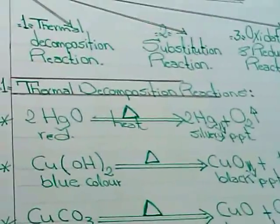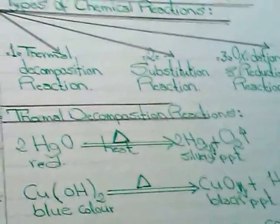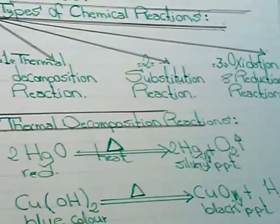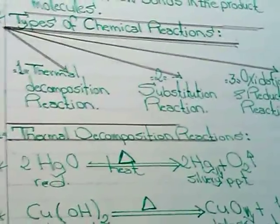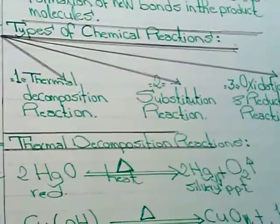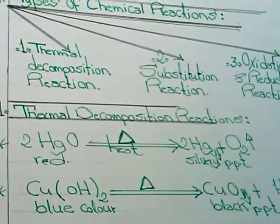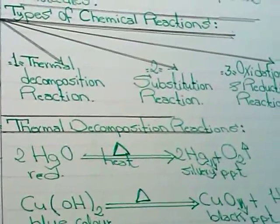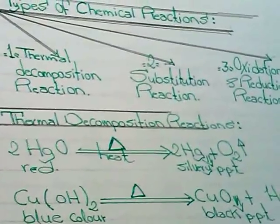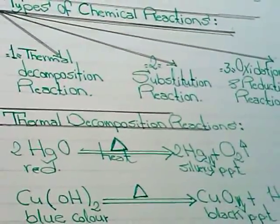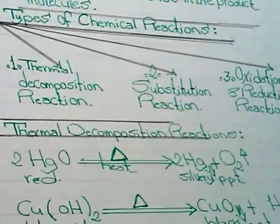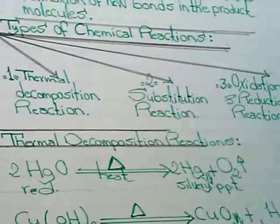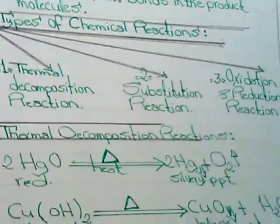Number 1: Thermal Decomposition Reactions. This means if you have a compound such as mercury oxide, red color HgO, it can be decomposed by heat. The triangle drawn on the sheet means heat, to get silvery PPT of mercury, 2Hg, and the oxygen gas evolves.